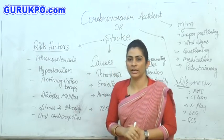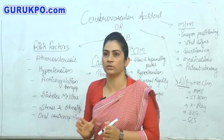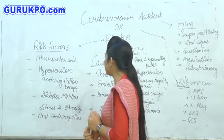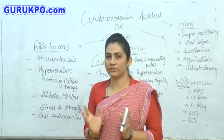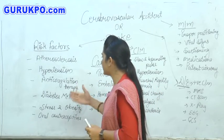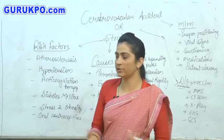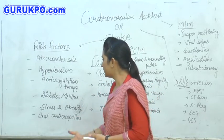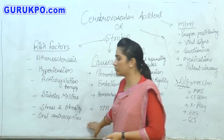Second one is hypertension. In hypertension, blood vessels undergo various problems. Blood vessels of the brain weaken and as a result these blood vessels rupture abnormally. Next one is anticoagulation therapy, which can lead to abnormal hemorrhage. Third one is diabetes mellitus. Next one is stress and obesity and oral contraceptives.